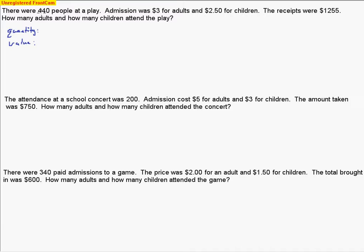So there were 440 people at a play. This is a total number, so when you get a total number, we're dealing with a quantity. Admission was $3 for adults and $2.50 for children — those are the values of each ticket. The receipts were $1,255, which is a total amount of money. They're asking for how many adults and how many children attended. So here are our unknowns: we'll call A the number of adults and C the number of children.